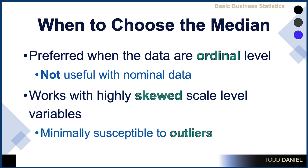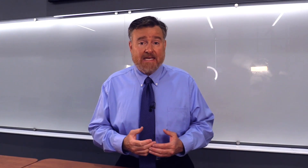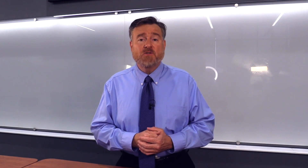The median also works well with highly skewed scale-level variables because the median is minimally susceptible to outliers. When there are extreme scores in your data set, the median will only be shifted by one point in the direction of the outlier, meaning it will not be greatly affected by those extreme scores. By contrast, we'll discover that the mean is susceptible to outliers.